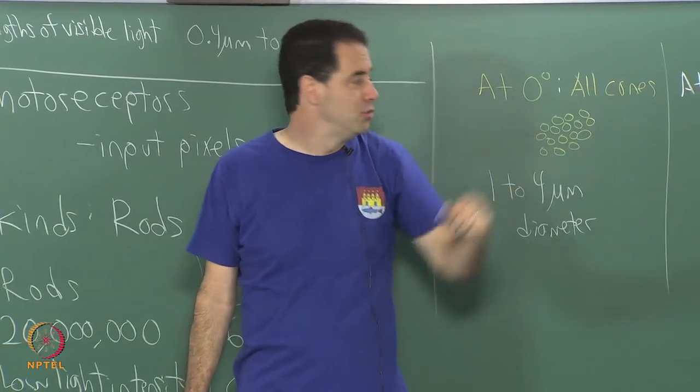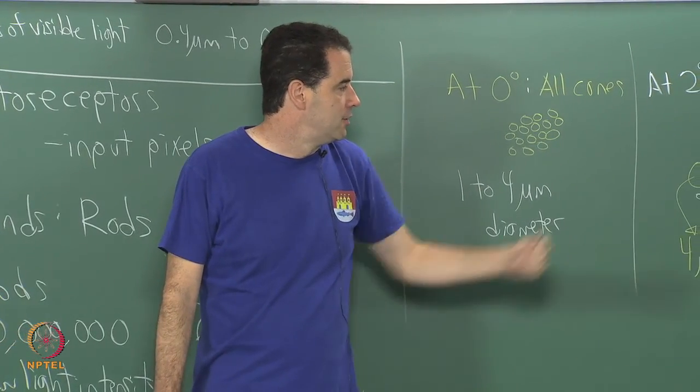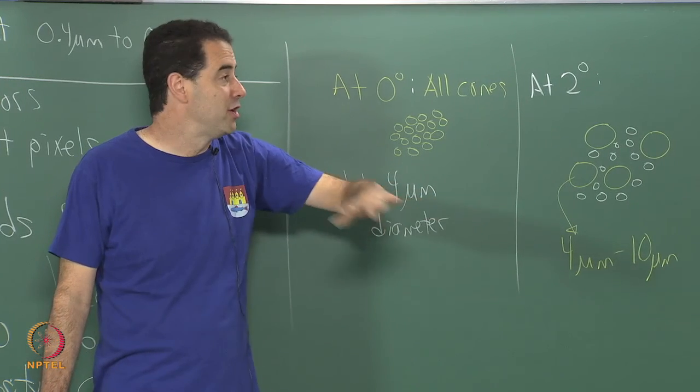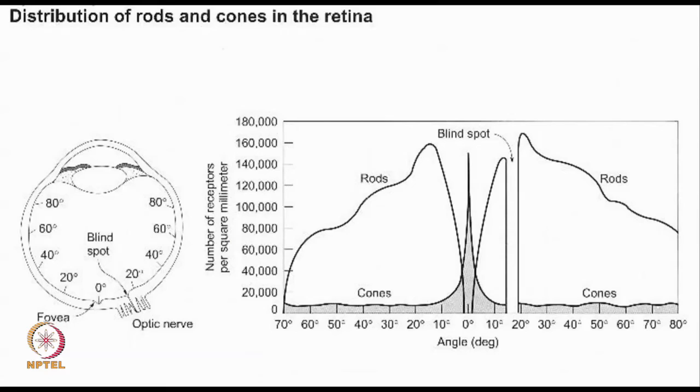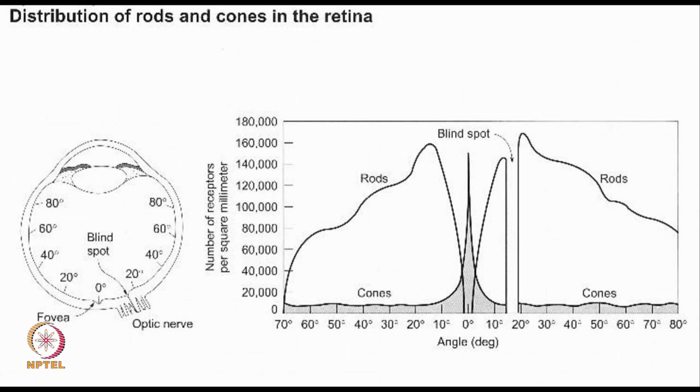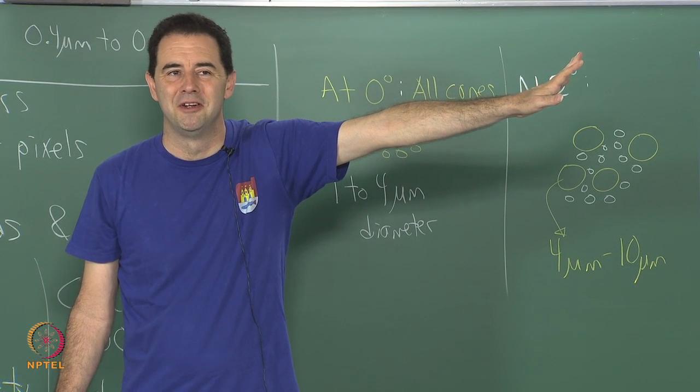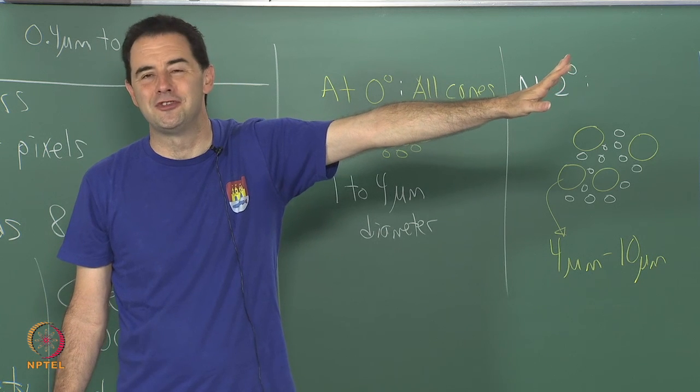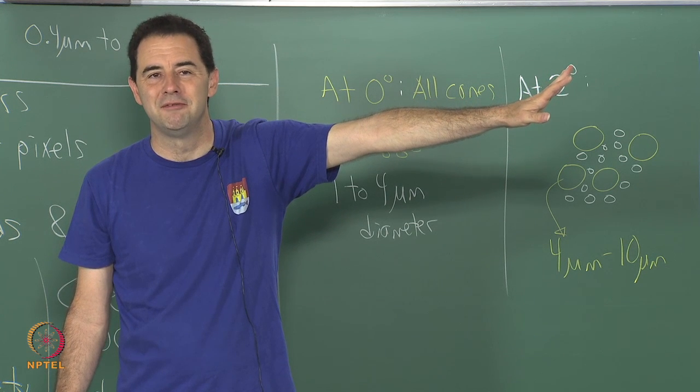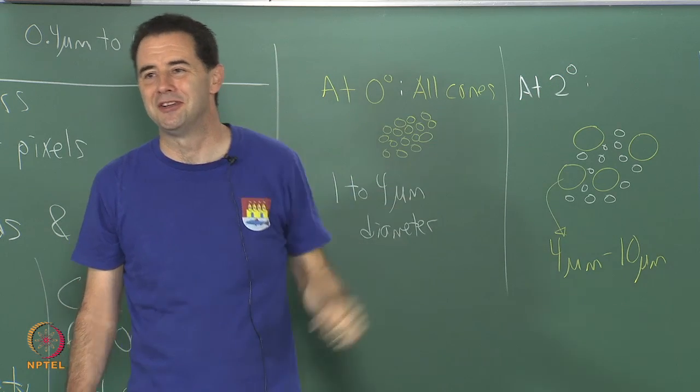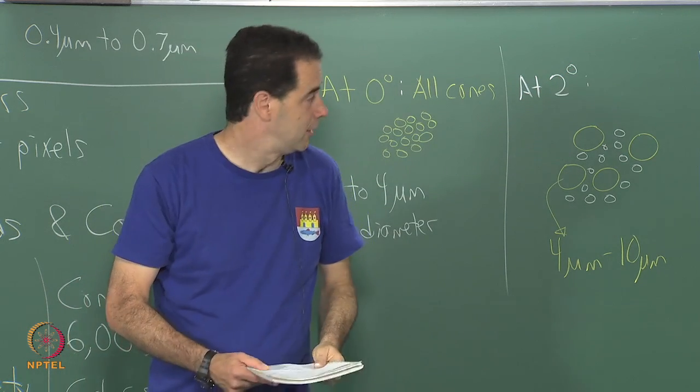We start losing spatial resolution in terms of color. Eventually the whole thing tapers off, as I showed in this picture here. Eventually when we get 60 or 70 degrees away, you can see that the density is going down significantly, so you end up losing eventually everything. Certainly your ability to distinguish colors out here is very weak. If you believe you can see colors there, it is because your brain is filling in information that is not there, trying to speculate. Any questions about this?